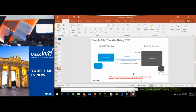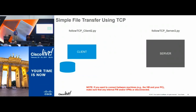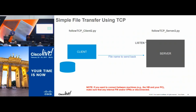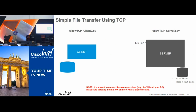Let's do a file transfer. We're not doing anything differently from the last example except the messages change. The client is going to send the name of a file it wants the server to serve. The server is going to look up that file — it needs to be in the current directory since we have no search logic — and send it out in chunks of 1024 bytes.